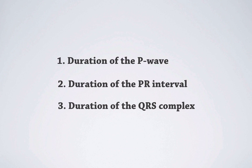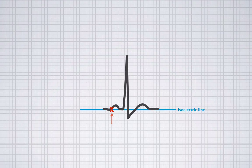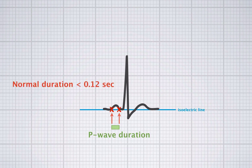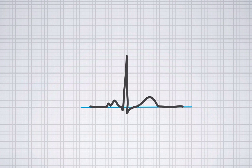Let's first look at the P wave duration. P wave duration starts when the P wave leaves the isoelectric line and ends when it reaches the isoelectric line again. The normal duration of the P wave is below 0.12 seconds. If the atria are enlarged, especially when the left atrium is enlarged, depolarization takes a little longer, and the P wave will therefore also be wider than normal.